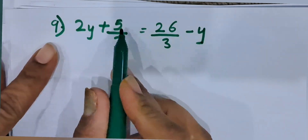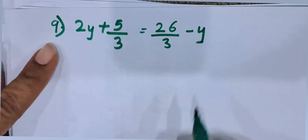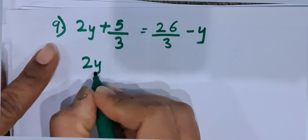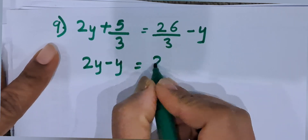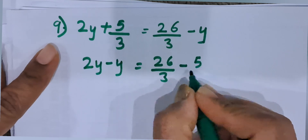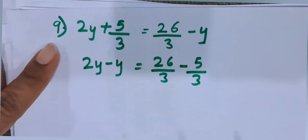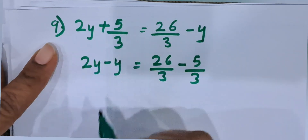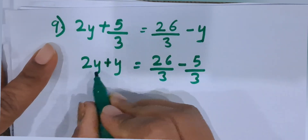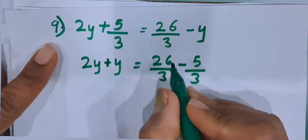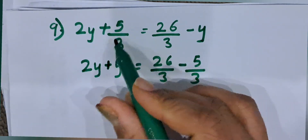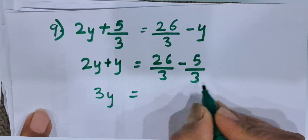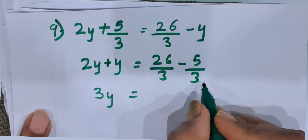Let us solve the 9th one. 2y plus 5 by 3 is equal to 26 by 3 minus y. Now, we will take all y terms on one side. 2y minus y is equal to 26 by 3 minus 5 by 3. 5 by 3 we have taken on the right hand side, so plus becomes minus. Minus y taken on the left hand side becomes plus. So, 2y plus y is equal to 26 by 3 minus 5 by 3.